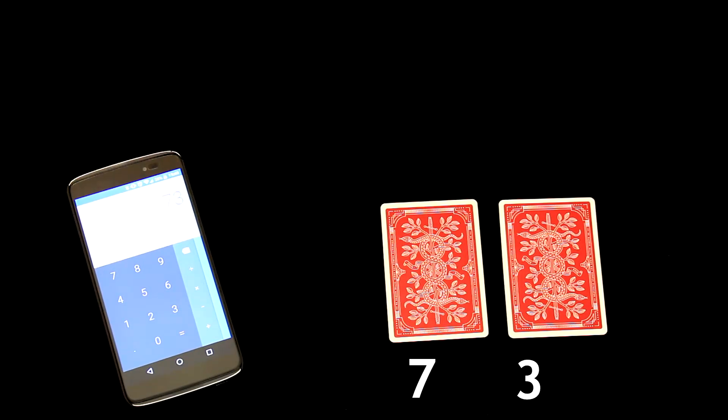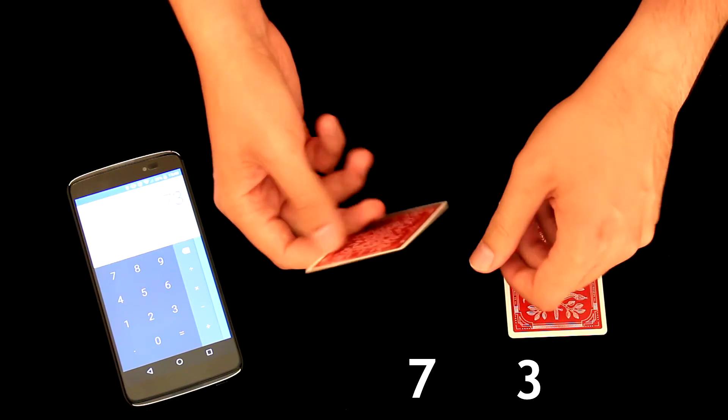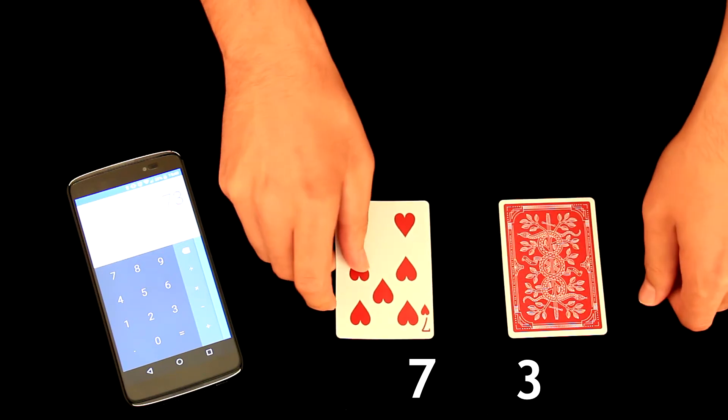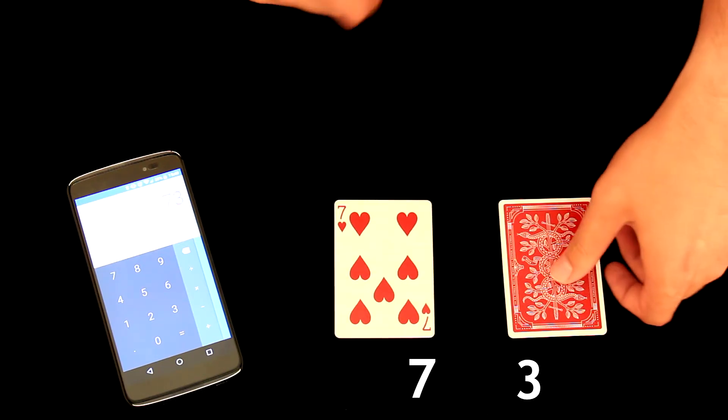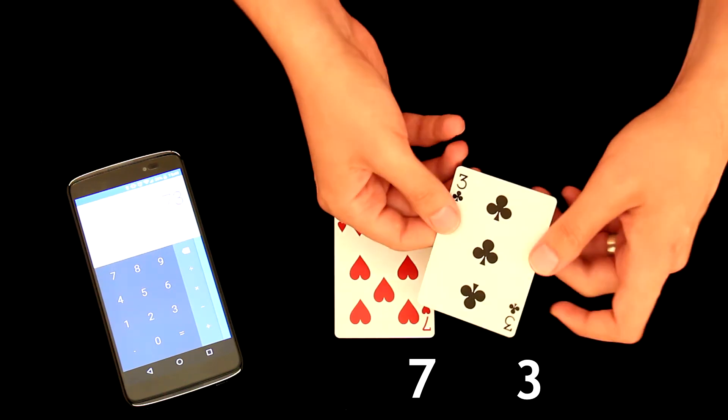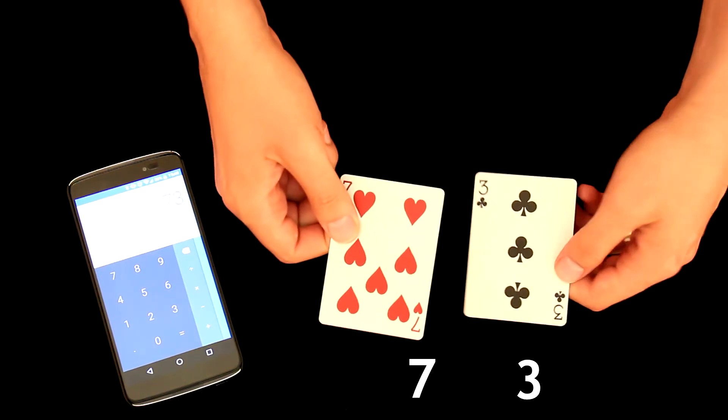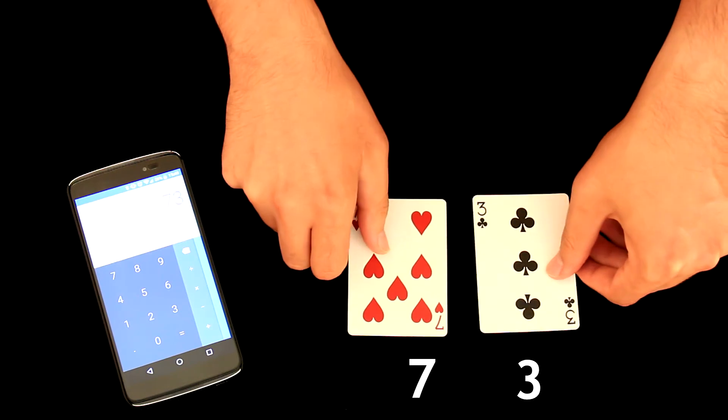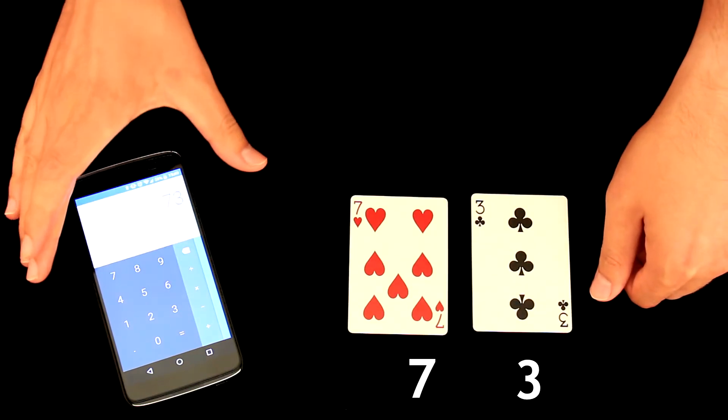Once the spectator will announce the result, I immediately know that his favorite number is 7 and spectator also found my lucky number, which is 3. 7, 3, 73 match the spectator's result.